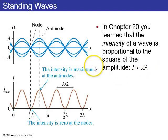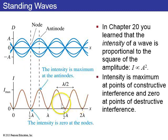Now, in Chapter 20, you learned that the intensity of a wave is proportional to the square of the amplitude. So, intensity of a standing wave is zero at the nodes, but then it goes up to, since the anti-nodes are two times the amplitude of the individual waves, the intensity is actually four times the intensity of the individual waves at the anti-nodes.